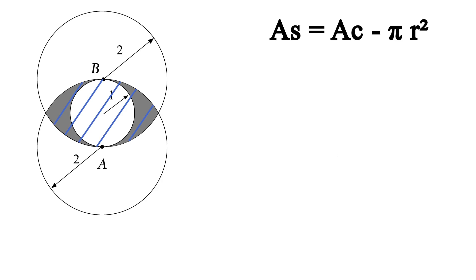That is common to both circles and if we find that and we subtract from that the small circle we will get the shaded region.